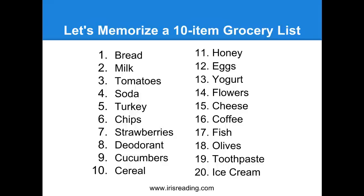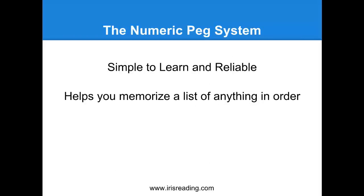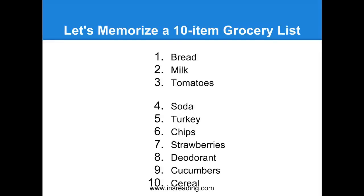At the end of the webinar I'll show you how you can extend it beyond 20 items. The name of this system is the Numeric PEG system — numeric because it uses numbers. With 20 items, using numbers helps us remember things in order. This is simple to learn and reliable, and it helps you memorize a list of anything in order. I need your complete attention because I'm going to ask you to be making visualizations. That's how this system works — we will visualize each one of these pegs.